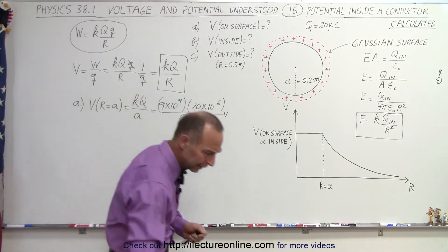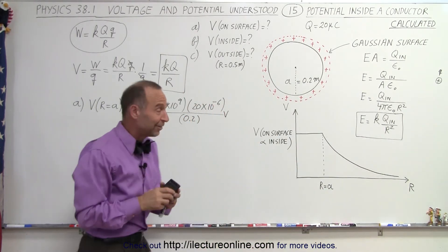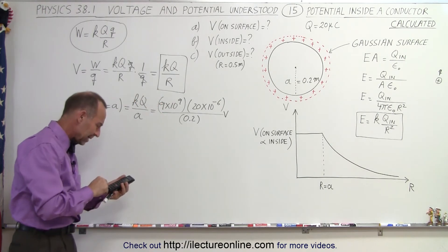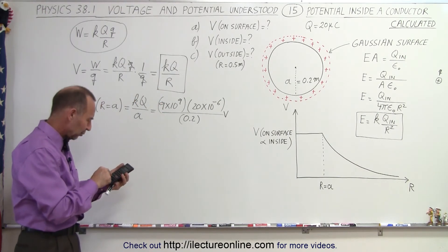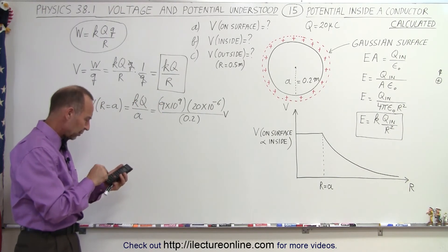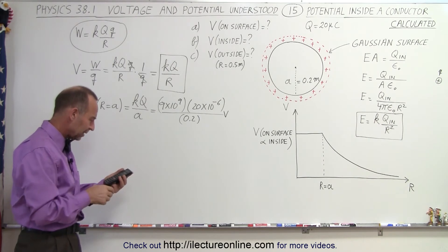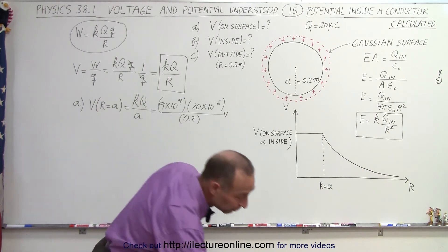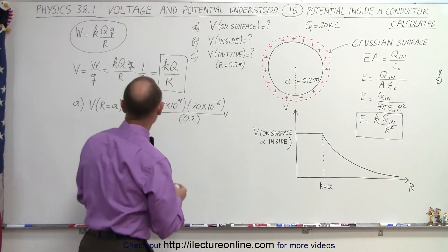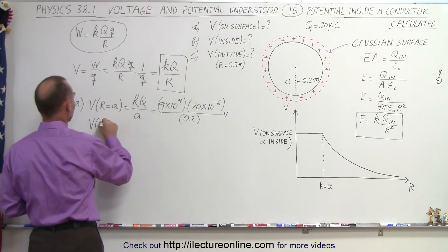Using the calculator: 9e9 times 20e-6 divided by 0.2 gives us 900,000 volts. So the voltage on the surface is 900,000 volts.